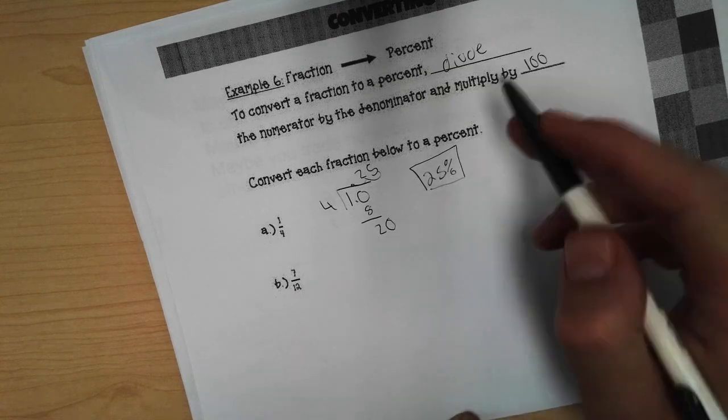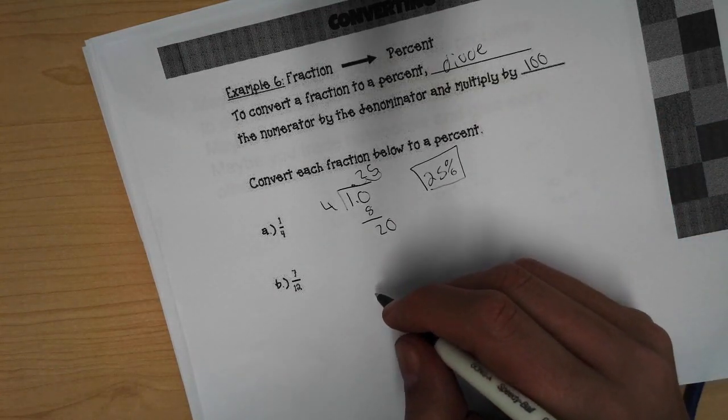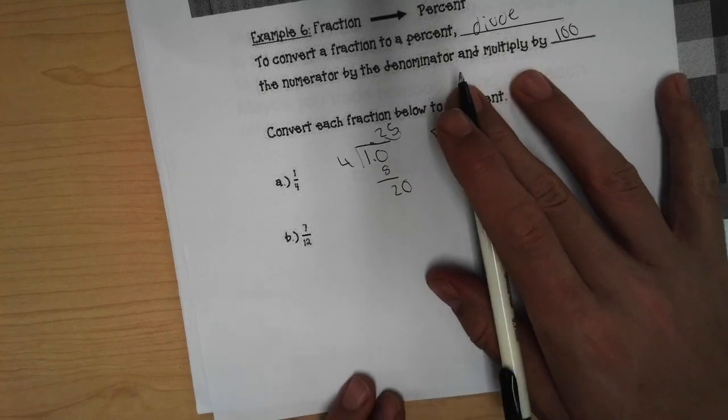Seven over twelve. Divide and multiply. I encourage you to pause the video and try this on your own.